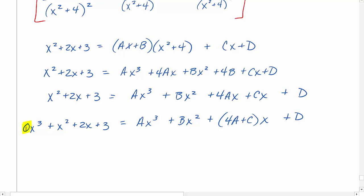0 has to be equal to a. This is an invisible one here. It has to be equal to b. 4a plus c is going to be equal to 2. And lastly, 4b plus d is going to be equal to 3. So let's write out our system. This one looks like it's going to be pretty easy to solve.